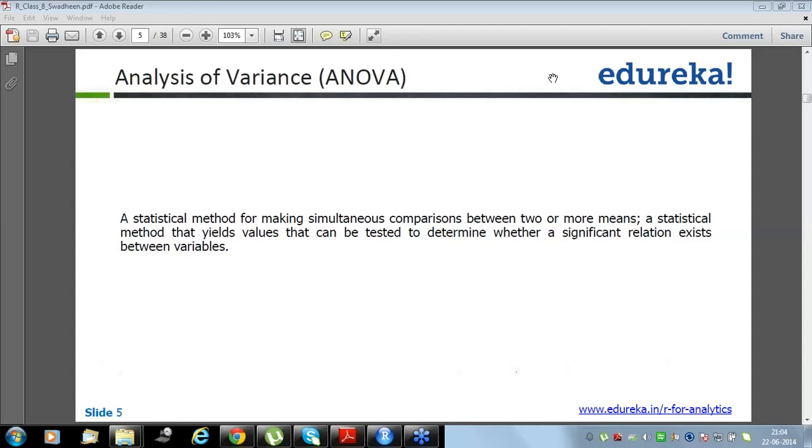Read it. A statistical method for making simultaneous comparison between two or more means. A statistical method that yields values that can be tested to determine whether a significant relation exists between variables or not while comparing their mean.